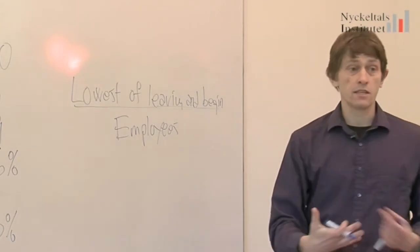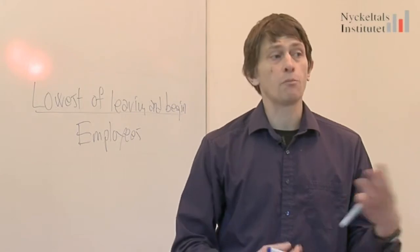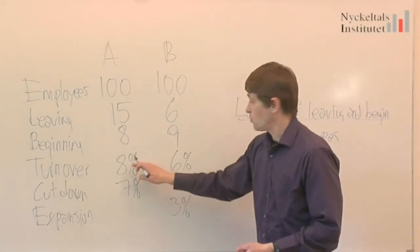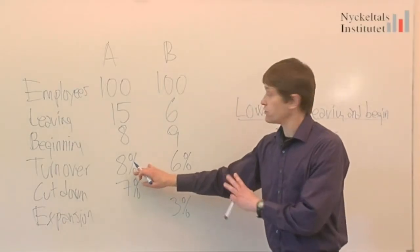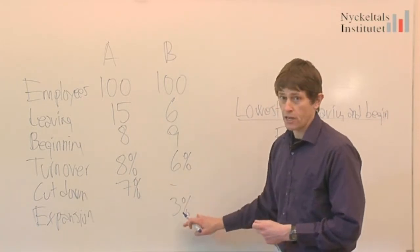That tells us the personnel turnover, the number of people that are replaced during the period. We have 5 different indicators here. We have leaving, beginning, turnover, cut downs, and expansion.